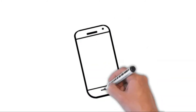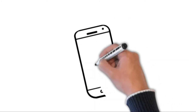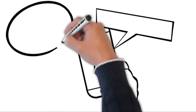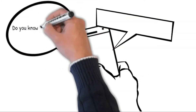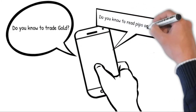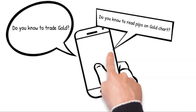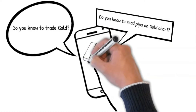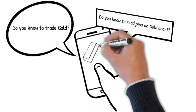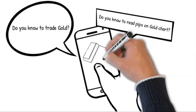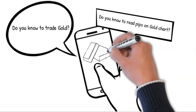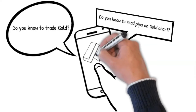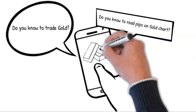This is Igor from the FX Igor YouTube channel and today I have some great questions for you. Do you know how to trade gold, and do you know how to read pips on gold when you use the MetaTrader platform? Before that, why do I like to talk about gold? Because gold has a brilliant color and doesn't corrode, and it became a symbol for immortality and power in many ancient cultures.